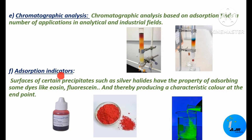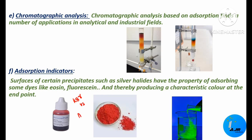The next important application is adsorption indicators. Surfaces of certain precipitates such as silver halides have the property of absorbing some dyes like eosine and fluorescein, thereby producing a characteristic color at the end point. Eosine and fluorescein are considered adsorption indicators and are used specifically in precipitation titrations. For example, potassium bromide (KBr) can be titrated against silver nitrate using eosine as the indicator, which gives a characteristic color at the end point.